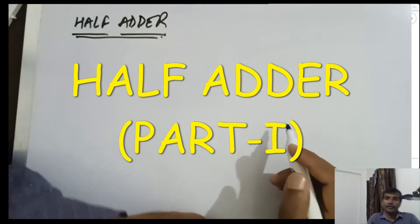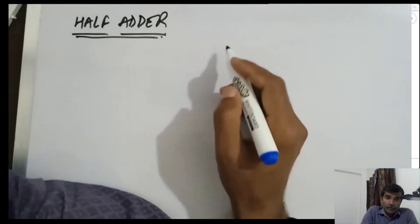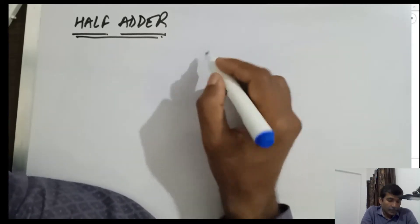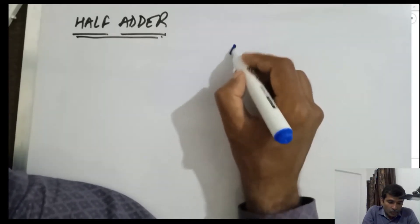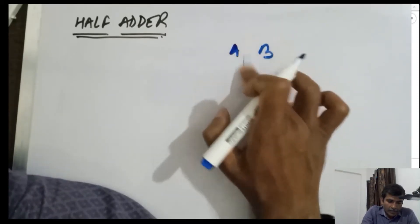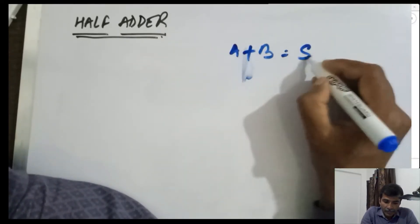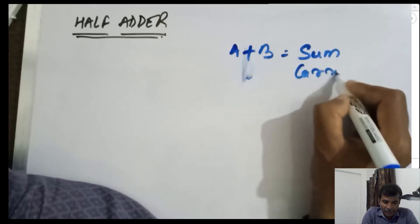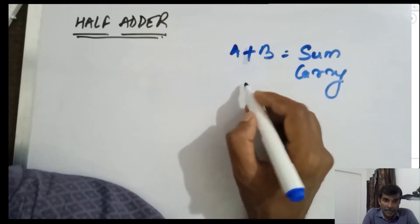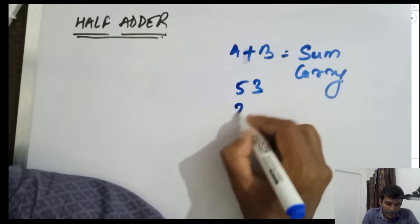In this class we are going to see the half adder — what actually it is. A half adder is realized on the breadboard using ICs. A half adder adds two bits, A plus B, to generate a sum and a carry.